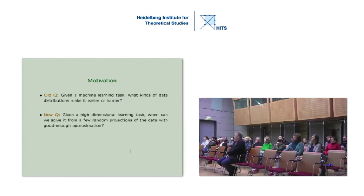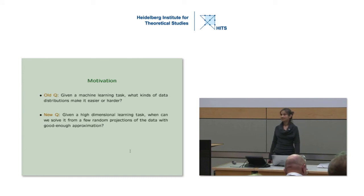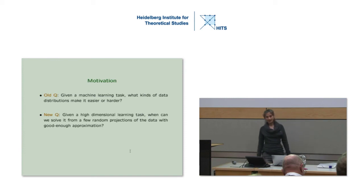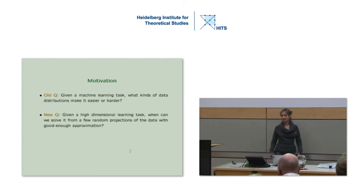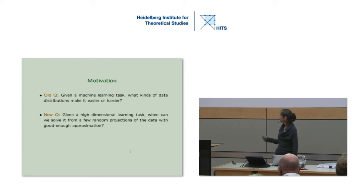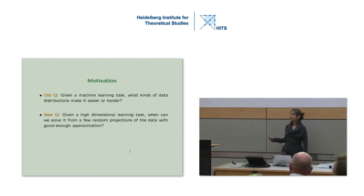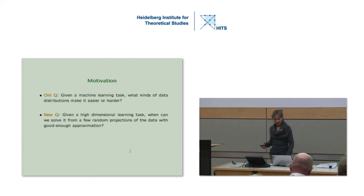A newer question arises nowadays when we get bigger and bigger, large-dimensional data sets and we run into computational feasibility problems running our algorithms. Given a high-dimensional learning task, when can we solve it from a few random projections of it? Random projections as a way to reduce dimensionality so that our algorithms work more efficiently—but when can we do this? These are two different questions, and I'm going to use the second as a surrogate for the first, because the second is more manageable and approachable.